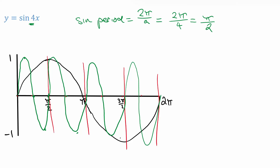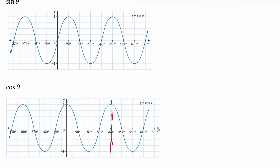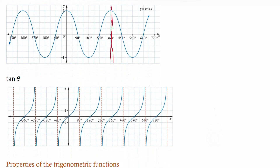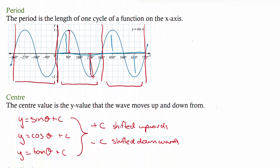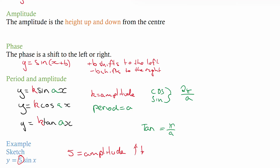To recap: on your screen are the original sine, cosine, and tan waves. Your period is the length of one cycle of the function. Your center is the line the wave moves up and down from — it's the starting point for sine and the midway point for cosine. Amplitude is the height up and down from the center — how much it stretches upward and downward. Phase is whether the graph shifts left or right, shown by brackets. Your k value is your amplitude, and your period is two pi over a for cosine and sine, or pi over a for tan — where a is the number connected to the x.